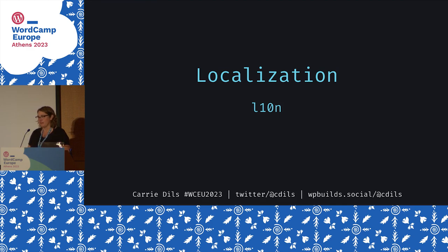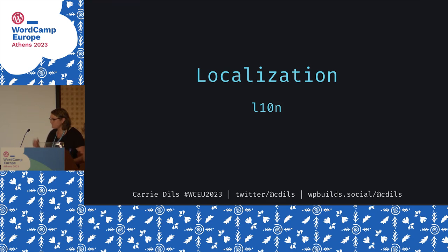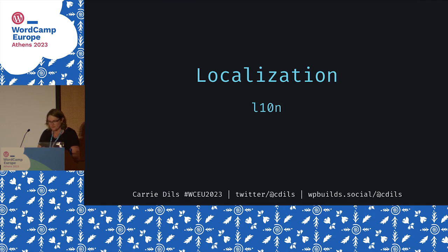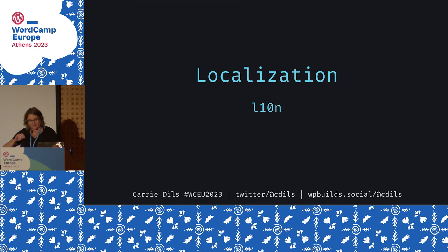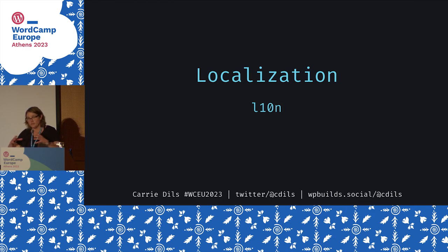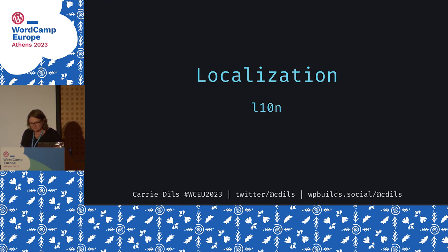Localization — abbreviated L10N, where 10 is the number of letters between the L and the N — is the process of actually breaking that down and translating it into different locales. WordPress is open source software, and one of the teams that makes WordPress are the polyglots, responsible for translating WordPress into over 200 locales. Around 70 are fully complete, covering WordPress core and themes and plugins created by Automattic or the WordPress organization.